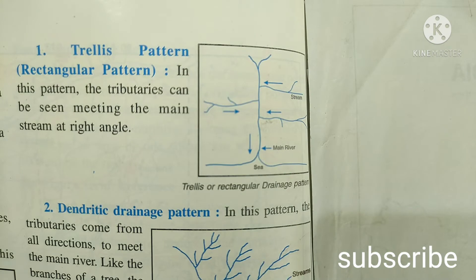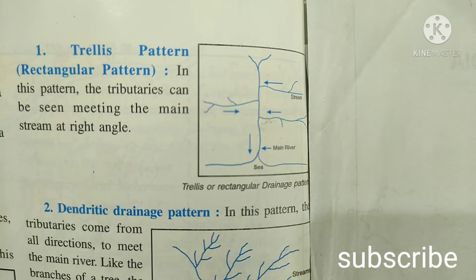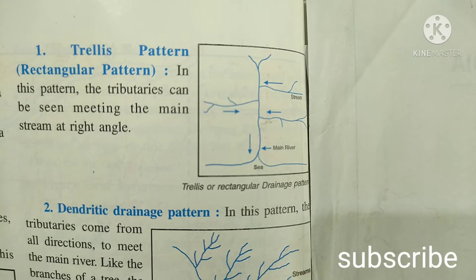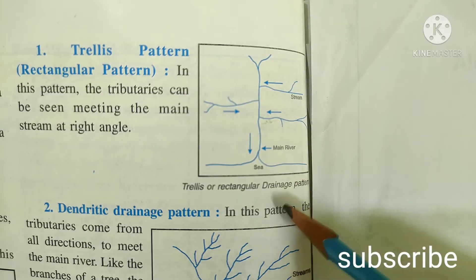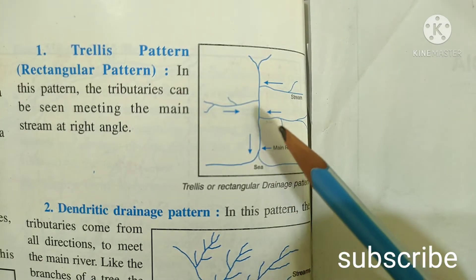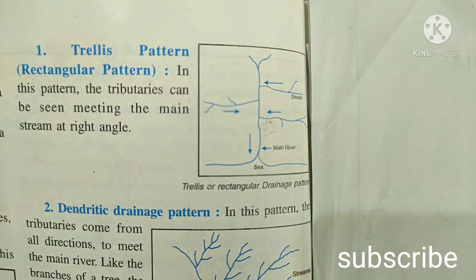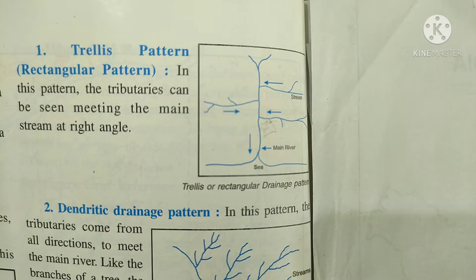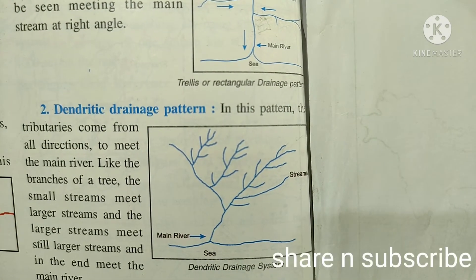Moving on to the next segment — drainage. A drainage system refers to the origin and development of streams through time, while drainage pattern means the spatial arrangement and form of streams. Here we will see five different types of drainage pattern. The first one is trellis pattern or rectangular pattern — in this pattern, tributaries meet the main stream at right angles. The small streams or tributaries join the main river in a straight line making 90 degrees, so this is called trellis pattern.